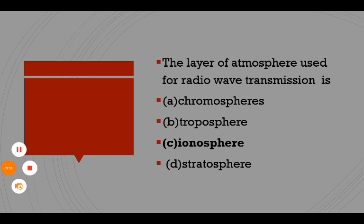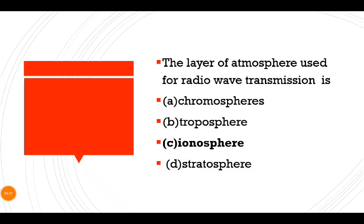The ionosphere is the layer used for radio wave transmission. The atmosphere has layers: upper atmosphere, mesosphere, exosphere, and the ionosphere — the ionized part of the atmosphere.